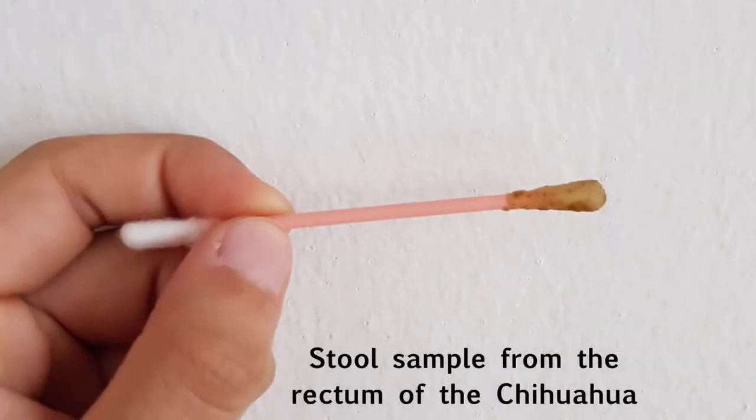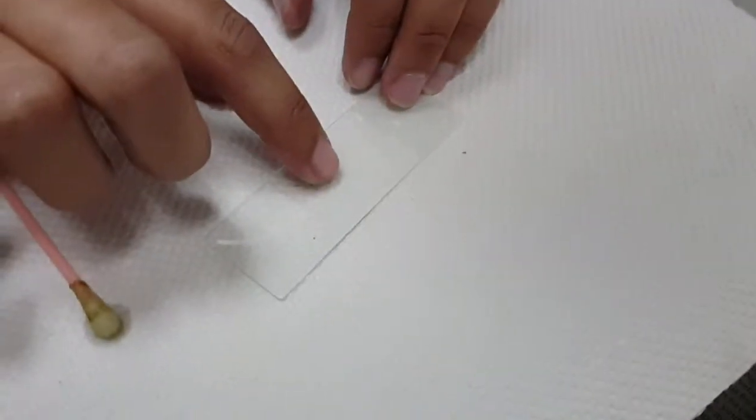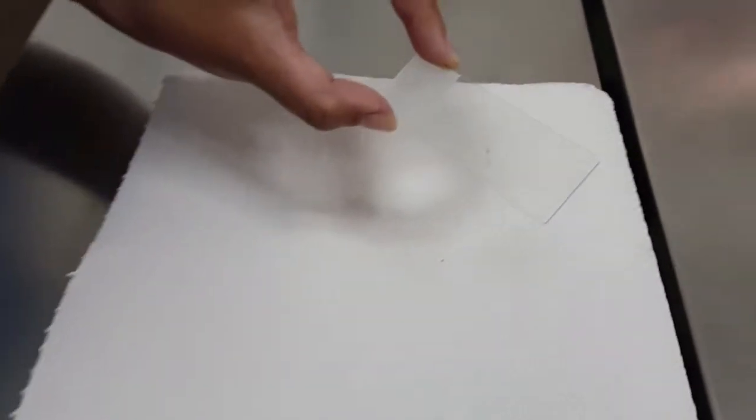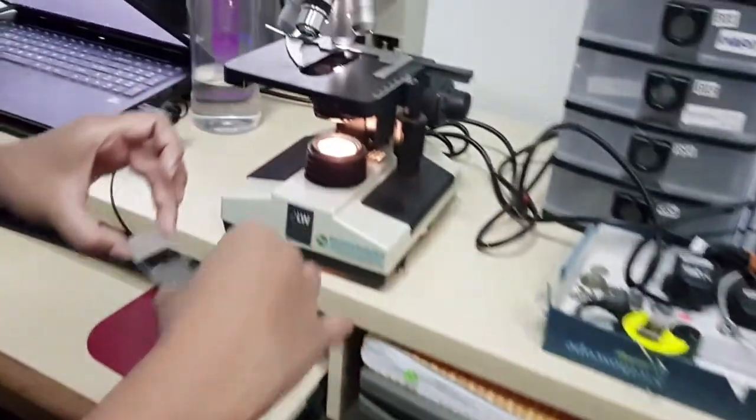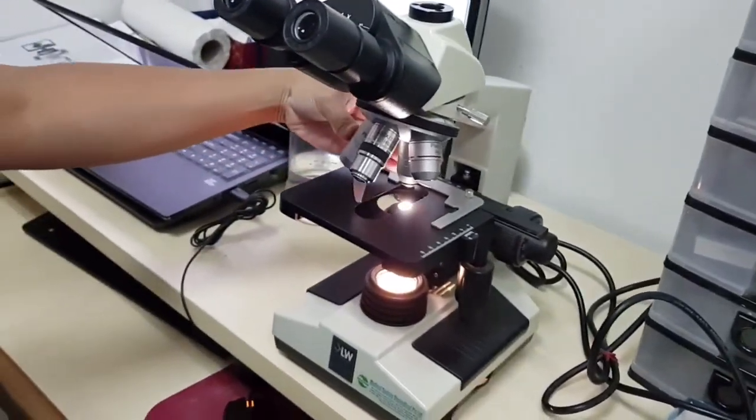First, a stool sample is needed and the vet will use a cotton bud to take it from the patient's rectum. Secondly, he will smear the stool sample onto a microscopic slide and place a cover slip over it. He will then place the stool sample under a microscope for observation.